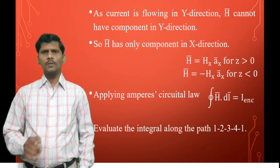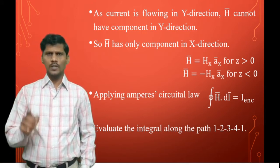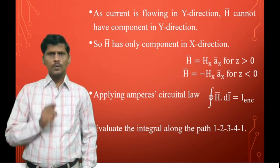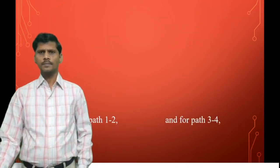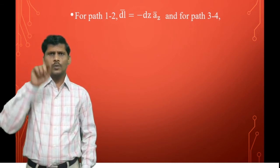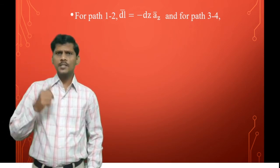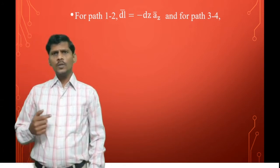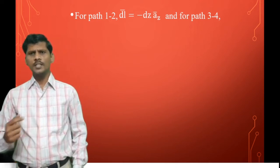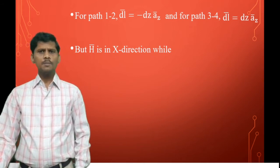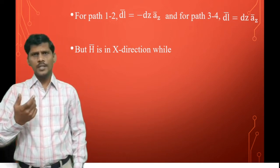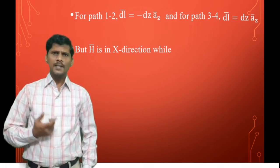Evaluate the integral along the closed path: 1→2, 2→3, 3→4, and 4→1. For path 1 to 2, the elementary length dl̄ = −dz·āz (going in the negative z-direction). For path 3 to 4, dl̄ = dz·āz (positive z-direction). Since H̄ exists only in the x-direction as Hx·āx or −Hx·āx, these paths are perpendicular to H̄.